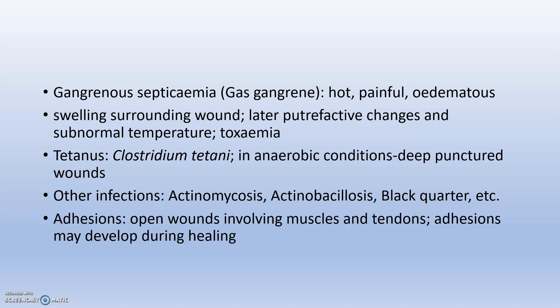The swelling later turns to putrefactive changes with subnormal temperatures and toxemia. Next is tetanus: Clostridium tetani is mainly found in anaerobic conditions, and the chance of tetanus is very high in deep punctured wounds — we should always provide tetanus toxoid prophylaxis. Other infections include actinomycosis, actinobacillosis, and blackleg, which causes gangrenous myositis. Finally, adhesions may develop during the healing process in open wounds involving muscles and tendons.